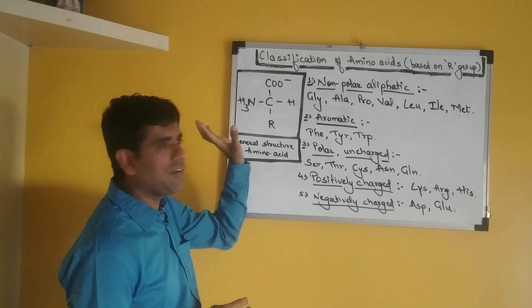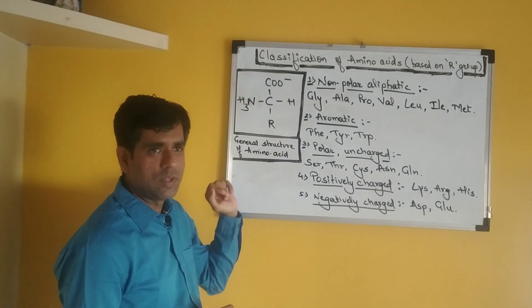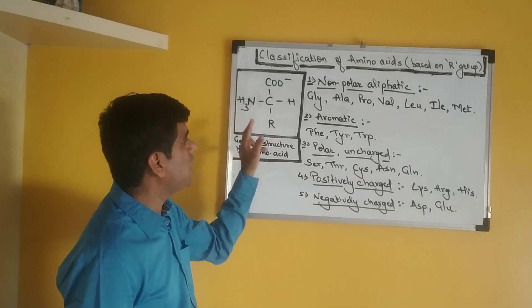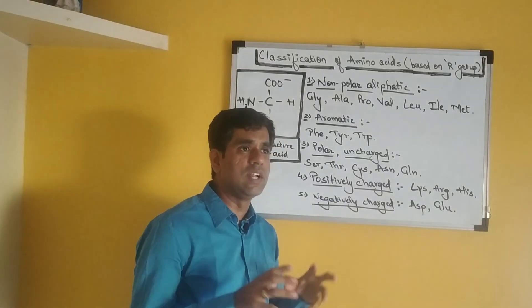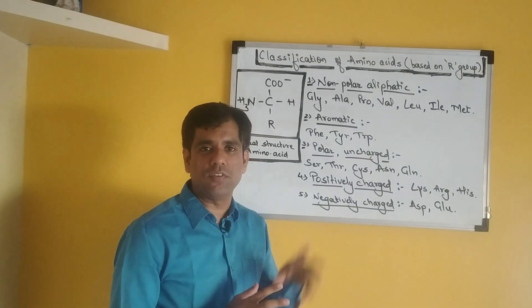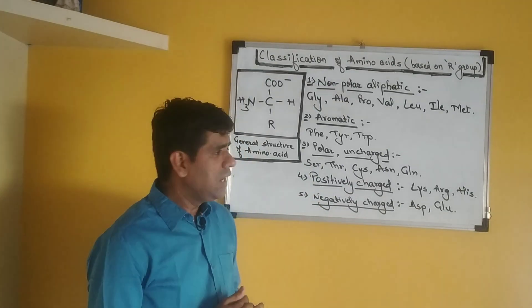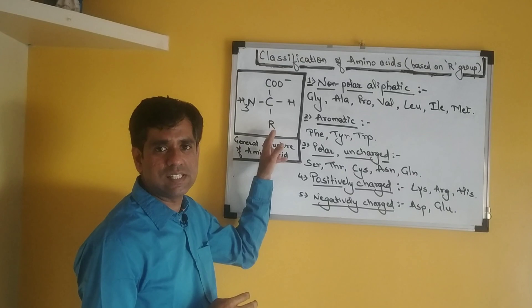Now these 20 amino acids, though they have a common structure, they all differ in their R groups. These R groups are of different types, different structure, different electrical charge, different size. They also influence the solubility of these amino acids in water. Let us have an overview about the classification of amino acids based on these R groups.